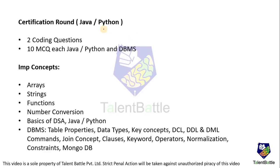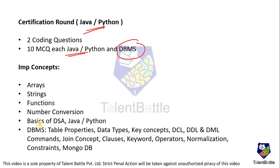First, the certification round. As you all know, you have to choose any one language - Java or Python. In the certification round, you will be having two coding questions based on the language that you choose. If you choose Java, you will get questions related to Java, or Python if you choose Python. As well as 10 MCQ questions on the particular programming language, and 10 questions for DBMS - fixed. So you have to prepare for basic things related to Java or Python and DBMS as well. I have listed some important concepts here; if you prepare accordingly, you can easily crack the certification round.